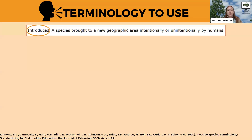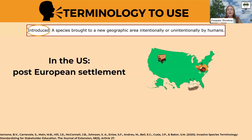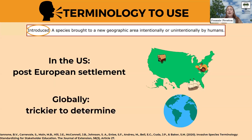An introduced species is a species that is brought to a new geographic area intentionally or unintentionally by humans — similar to non-native. In the U.S., we typically consider a plant introduced if it was brought here post-European settlement. This has some nuances because there were people living here and moving plants around before the Europeans arrived, but for the timeline of invasive plants, that's typically what we mean. Globally, in places that are more connected, it can be trickier to determine where a plant is originally from, but people can actually use the plant's DNA to figure out what it's related to and where it's from.